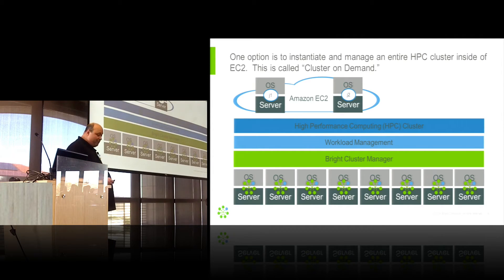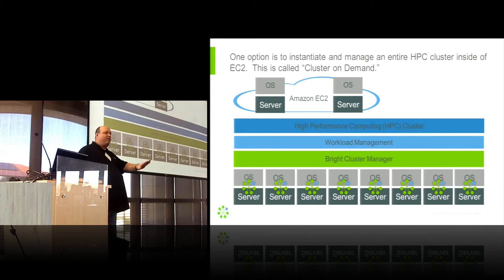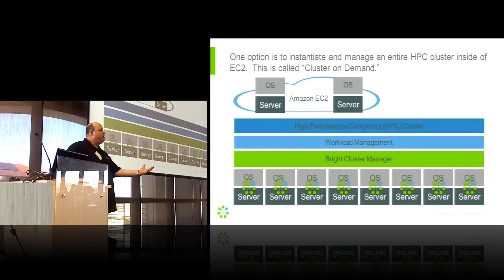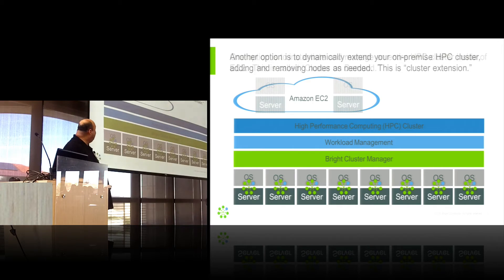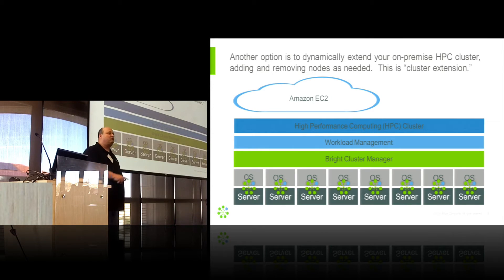Jobs start running up there, and when they're done they go away, but the nodes don't — they stay running in this manual mode until you turn them off. When you turn them off, they go away and you're no longer being charged. You only pay for what you're using. This is one good model that a lot of people like to use.